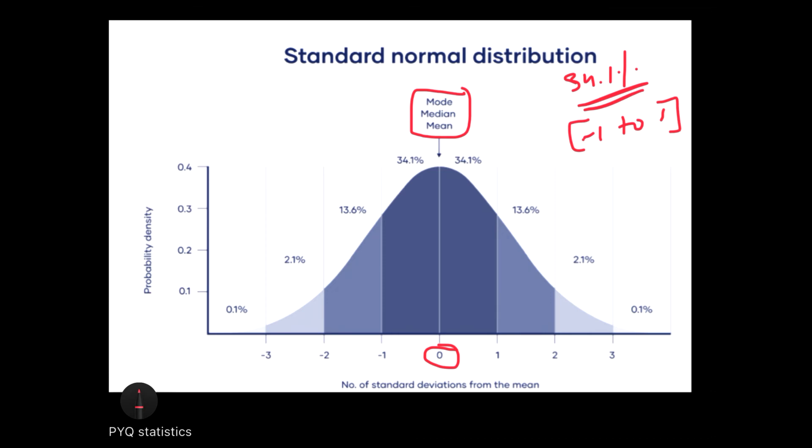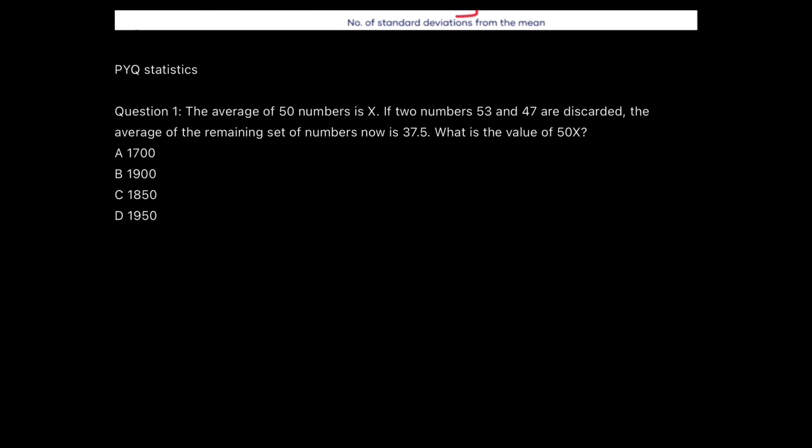This will be actually 34.1 into 2. Or you can say that 34.1 percent of the data is present in the range of minus 1 and 0. Similarly, 34.1 percent data is present in the range of 0 to plus 1. Similarly, if someone asks you how much data is between 2 and 3, then you can look at this and tell that this is 2.1 percent. That's how you understand the value or the meaning of standard deviation.